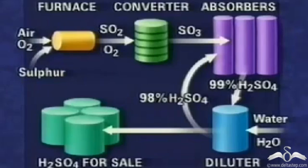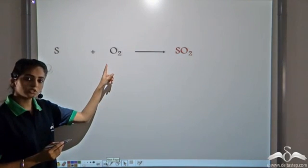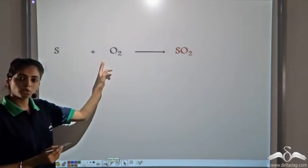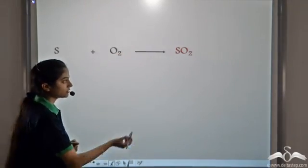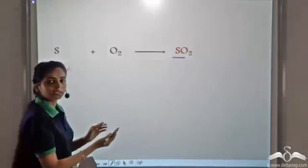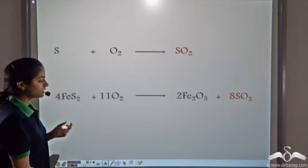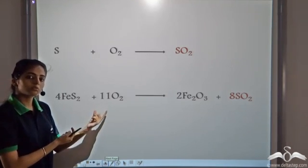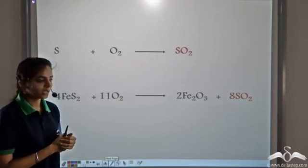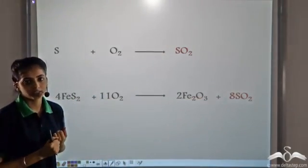Let's revise the process. First, we burn Sulfur in the presence of Oxygen — Sulfur reacts with Oxygen to form Sulfur Dioxide. This Sulfur Dioxide can also be prepared from sulfides. For example, we can use Iron Sulfide. When Iron Sulfide reacts with Oxygen, it forms Iron Oxide (Fe2O3) and releases Sulfur Dioxide gas.